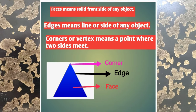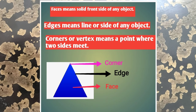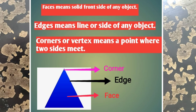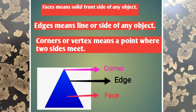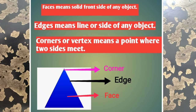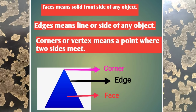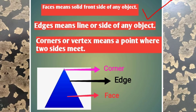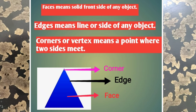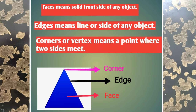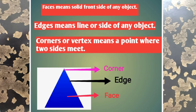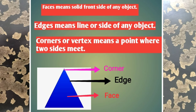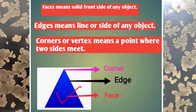Let's first clarify the new terms, since you are doing this for the first time. What are faces, what are edges, and what are corners? Face means the front side of any object — what you see in front of you. Just like your own face is your front face, when you look at a circle or a rectangle, what you see in front is its face.